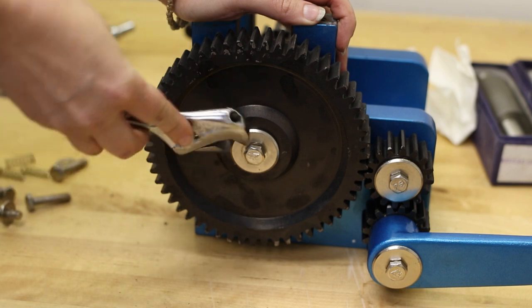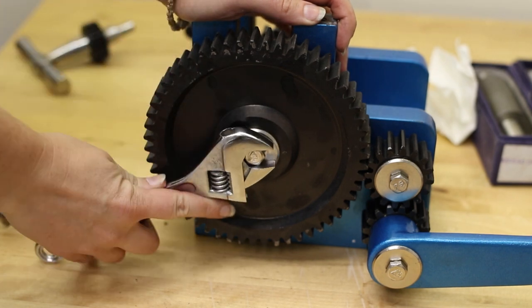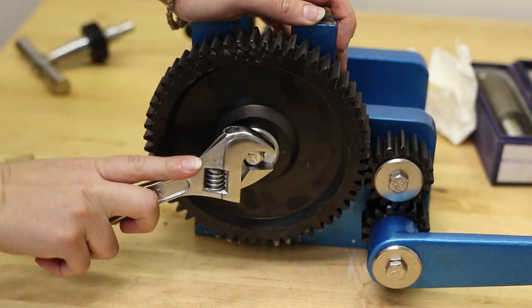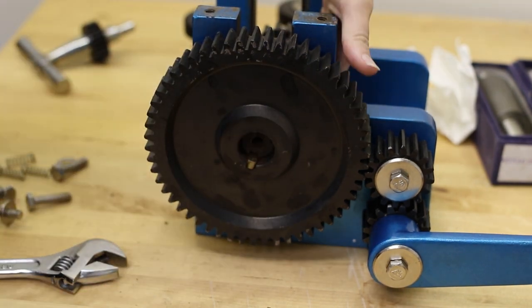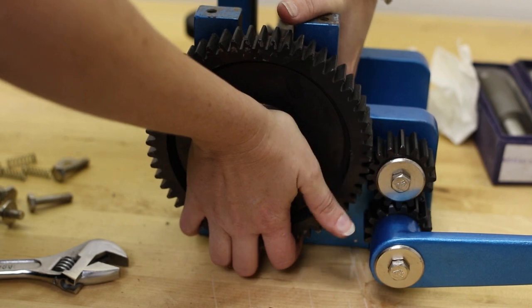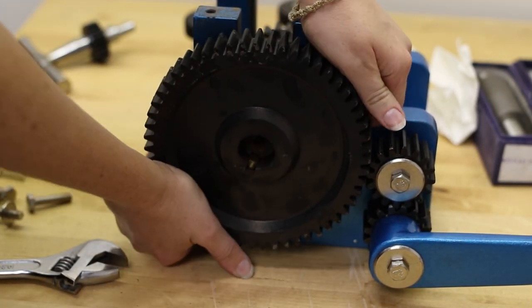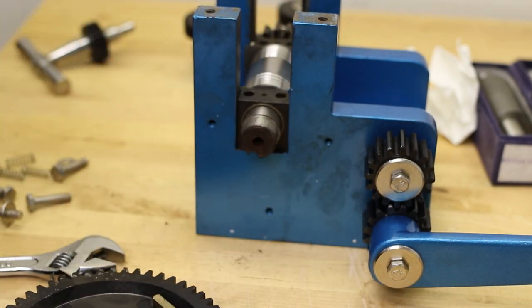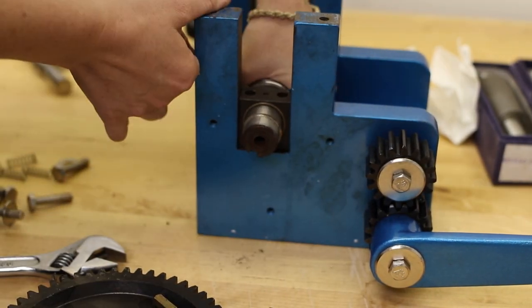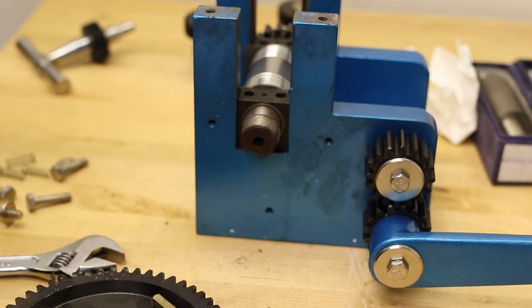So usually the easiest way to do this is to start by taking the large gear off the side. As you can see, I struggle a little bit to get it off. It takes some wiggling and tapping and stuff to get it loose. Again, don't misplace the key stock, and then you can slide that bottom roller out, which is also a little bit stuck, of course.